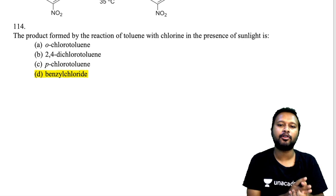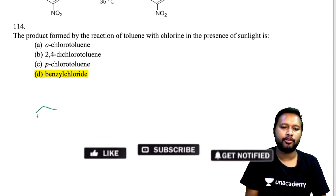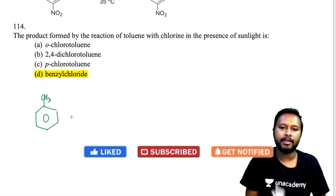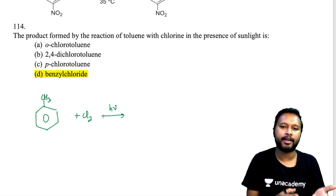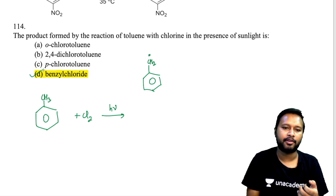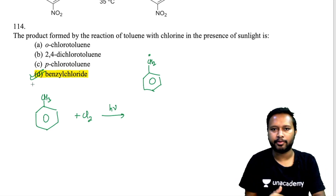Question 114: toluene reacting with Cl₂ in the presence of sunlight. Sunlight initiates radical chlorination. The most stable radical is the benzylic radical (PhCH₂•), so chlorination occurs at the benzylic position. The final product is benzyl chloride (PhCH₂Cl).